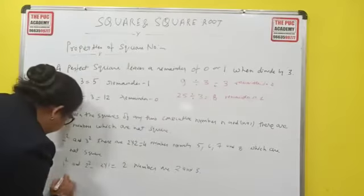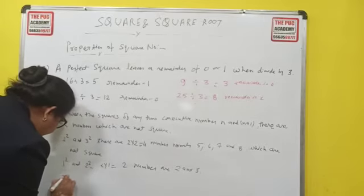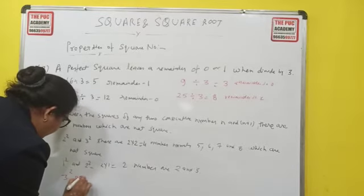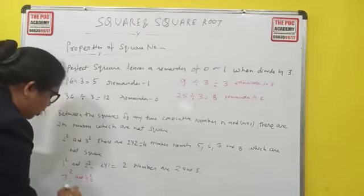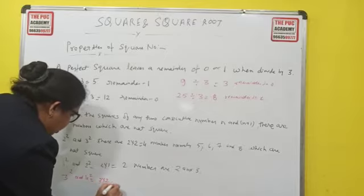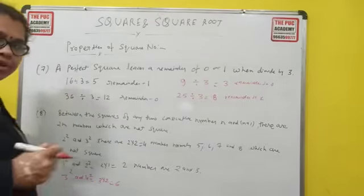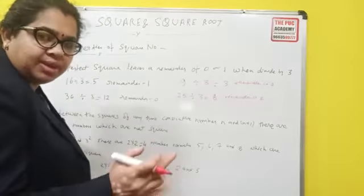We'll take another example. Between 3 squared and 4 squared, that's 3 times 2, which is 6 numbers. So between 9 and 16, there will be 6 numbers.